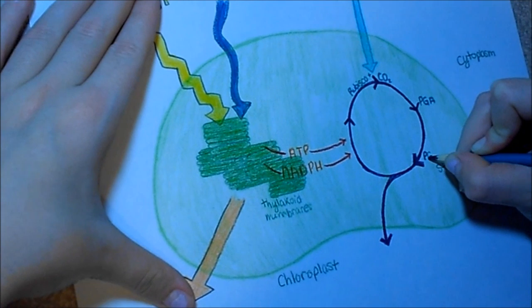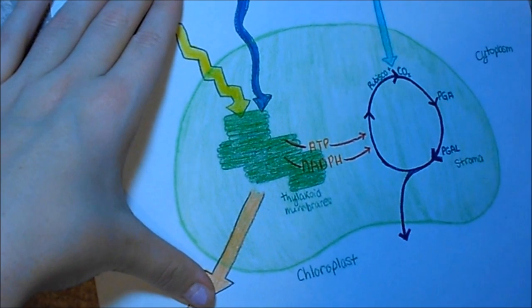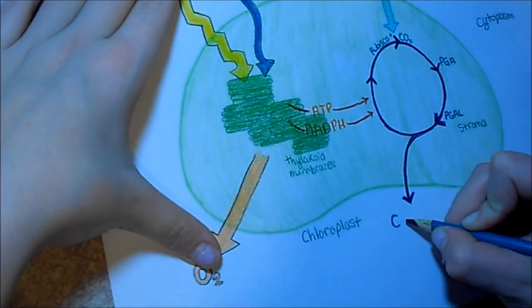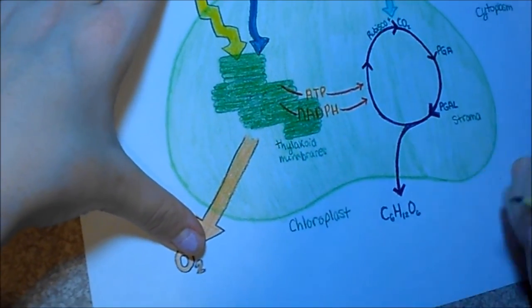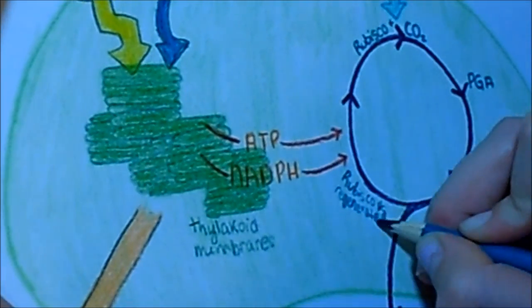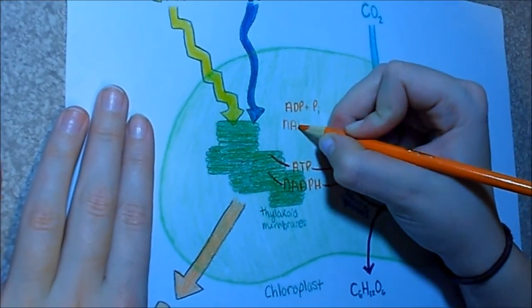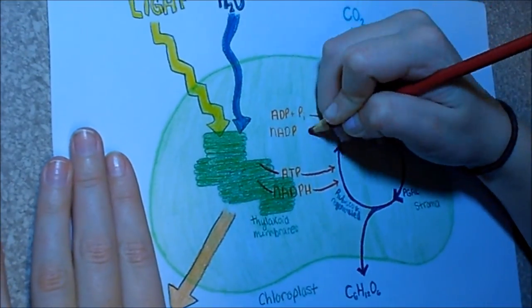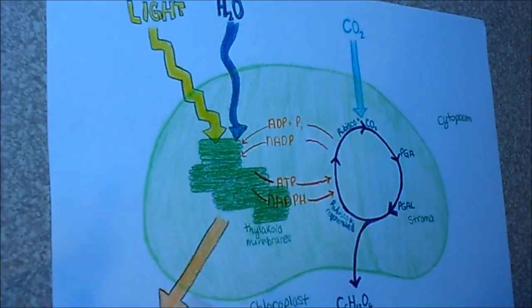The two PGA molecules form two molecules of PGAL, which bonds together to make a six-carbon sugar, like glucose, which is sent out of the chloroplast. The rubisco is regenerated and is just waiting to be used again. The ADP plus PI and the NADP go back into the thylakoid membranes to be utilized again. This is known as the light-independent reaction.